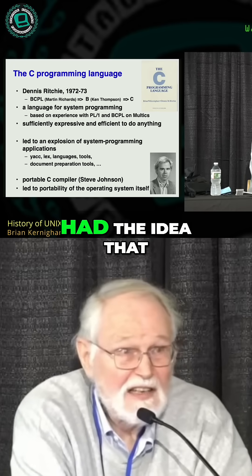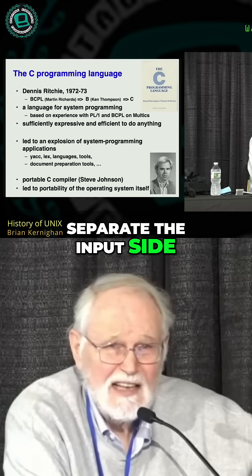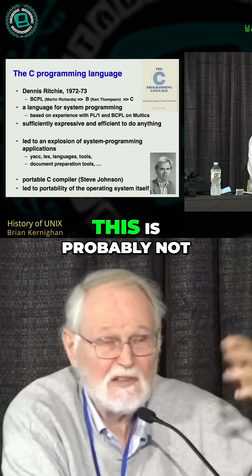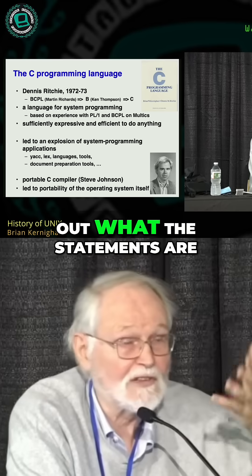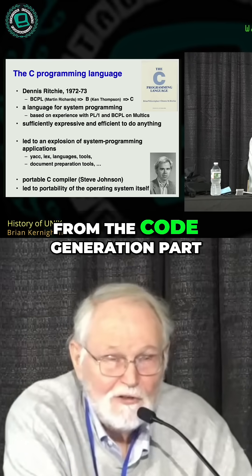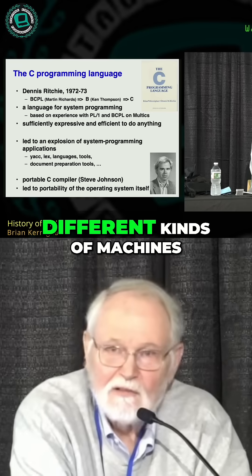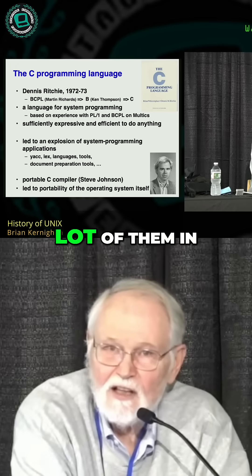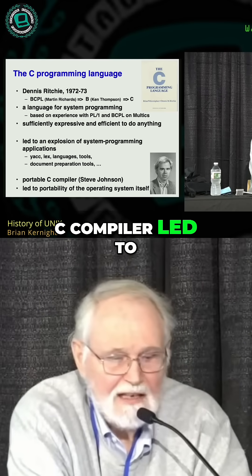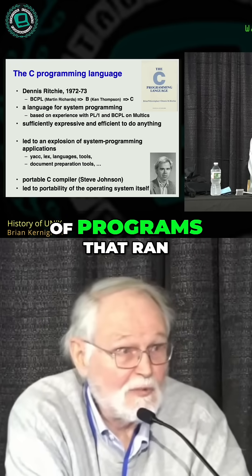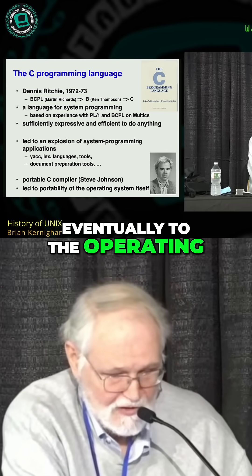Steve Johnson had the idea to separate the input side of a compiler — the parsing and figuring out what the statements are — from the code generation part, so you could have code generation for different kinds of machines. Steve Johnson's portable C compiler led to the portability of lots of programs that ran on Unix, and then eventually to the operating system itself.